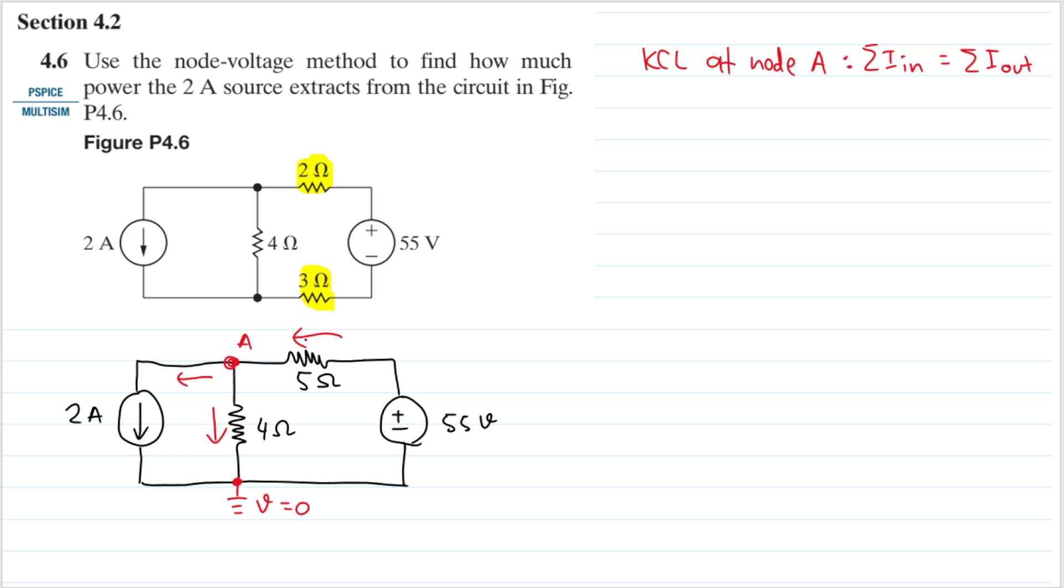Remember that this is zero volts and this is 55, so this must be 55 volts from the ground. And this current here we can calculate using Ohm's law, so I'll have 55 volts minus VA divided by 5 ohms.